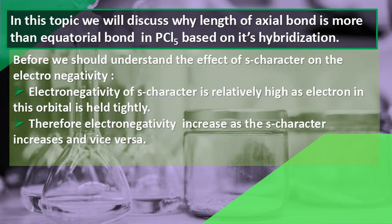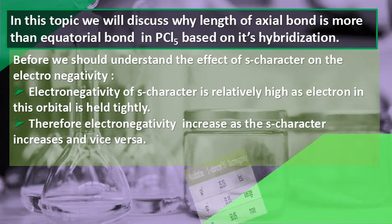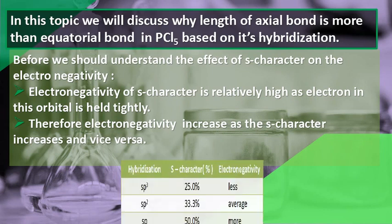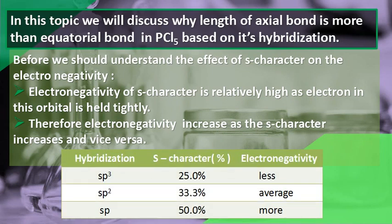Before we proceed, we should understand the effect of S-character on electronegativity. Electronegativity is relatively high for orbitals with more S-character, as electrons in such orbitals are held tightly. Therefore, electronegativity increases as S-character increases, and vice versa. The table shown below depicts the relation between S-character and electronegativity.